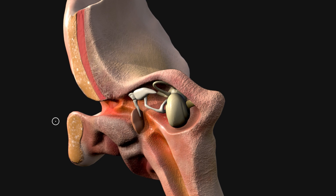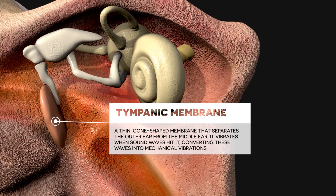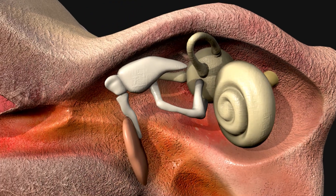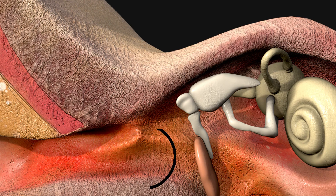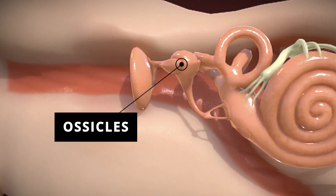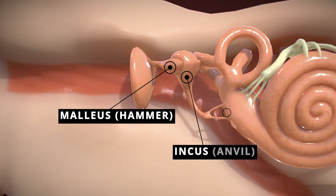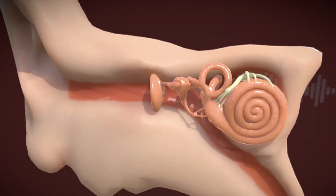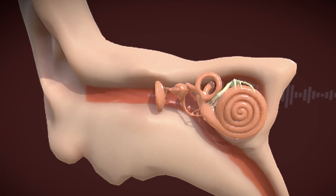The middle ear contains the tympanic membrane, or eardrum, a thin cone-shaped membrane separating the outer ear from the middle ear. It vibrates when sound waves hit it, converting these waves into mechanical vibrations. The ossicles — three tiny bones called the malleus, incus, and stapes — are the smallest in the human body and amplify and transmit vibrations from the eardrum to the inner ear.